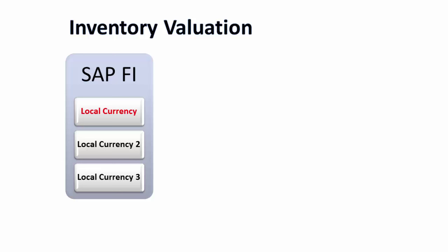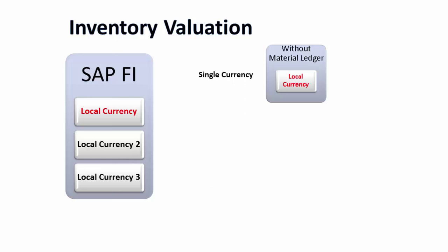When it comes to inventory valuation without material ledger, you have only one option — inventory valuation at the local currency values. You can't valuate inventory at different currencies; only one currency will be used. In Finance tables it will convert into local currency two and three, but for inventory valuation you will have only one currency value.